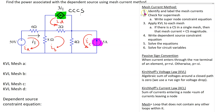The main steps in applying the mesh current method to solve a given circuit are shown here. Mesh current method requires application of Kirchhoff's voltage law, and we adopt passive sign convention when writing the KVL expressions. The first step is to identify and label the mesh currents.